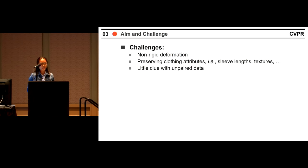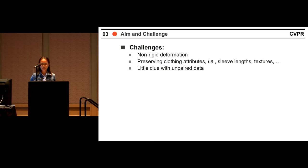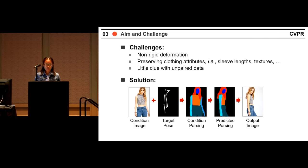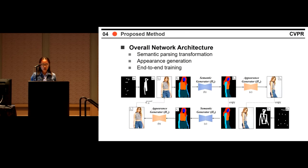First, the non-rigid nature of the human body makes it difficult to transform spatially misaligned body parts. Second, clothing attributes like sleeve lengths and textures are difficult to preserve during generation, yet these are important for human visual perception. Third, the lack of paired training data gives little clue for establishing effective objective functions. In our work, we introduce semantic parsing as the bridge to learn the hard mapping. We decompose pose-guided image generation into semantic parsing transformation and appearance generation.